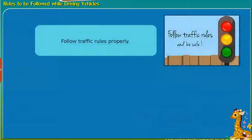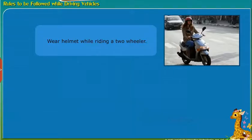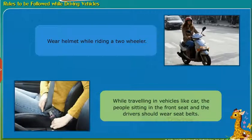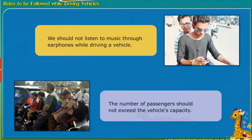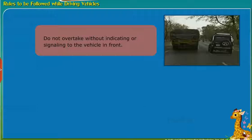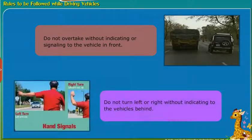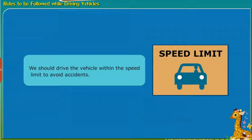Let us look at the rules to be followed while driving vehicles: Follow traffic rules properly. Do not use a mobile phone while driving. Wear a helmet while riding a two-wheeler. People sitting in the front seat and drivers in cars should wear seat belts. Do not listen to music through earphones while driving. The number of passengers should not exceed the vehicle's capacity. Do not overtake without signaling the vehicle in front, and do not turn left or right without indicating to vehicles behind. Drive within the speed limit to avoid accidents.